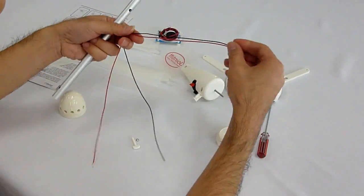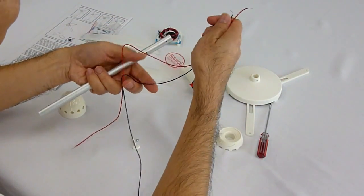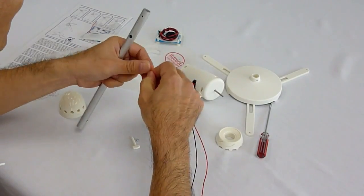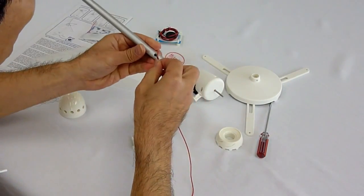Insert the red and black wires from the large hole, that is the hole on the same side of the screw hole, on the aluminum tube towards the other end of the tube as shown in the video.